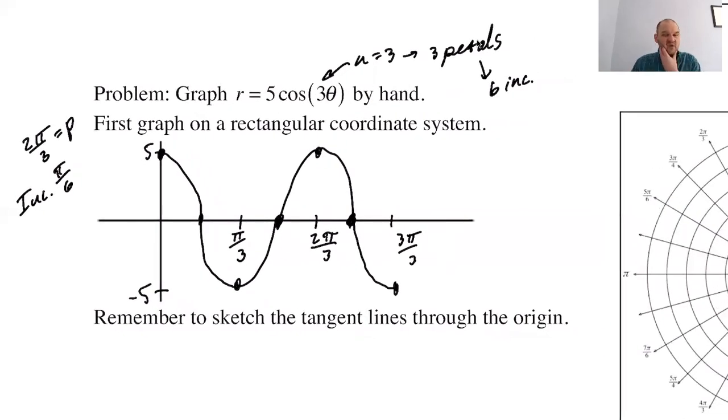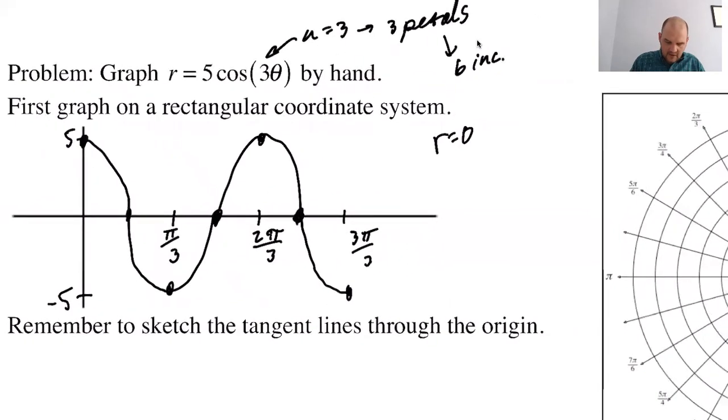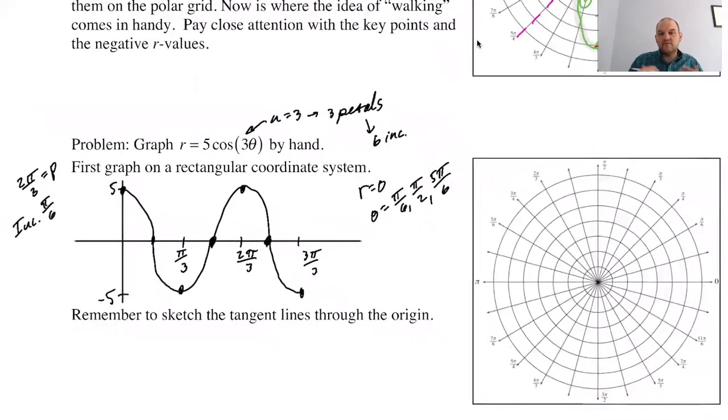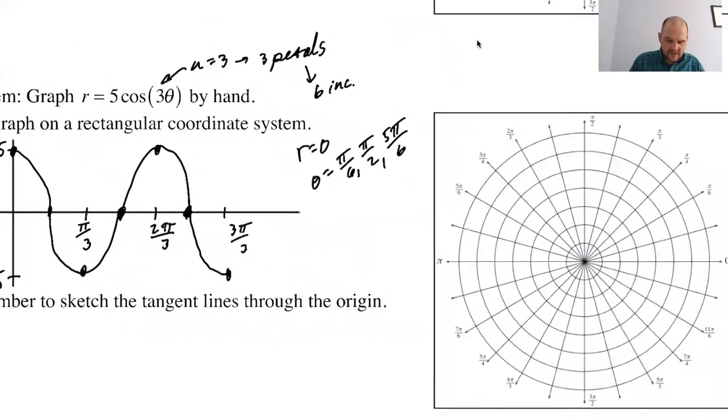I need to know where the zeros are, right? So r equals 0. I could solve it, but I have the graph, and I already know. So r equals 0 gives me theta equals pi over 6. And then this is 2 pi over 6, 3 pi over 6, which is pi over 2, 4 pi over 6, 5 pi over 6. And so those I want to dot in.